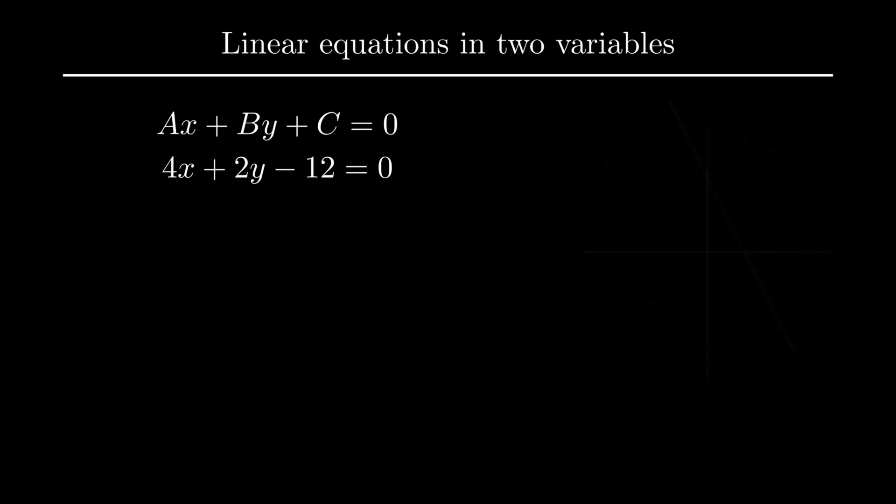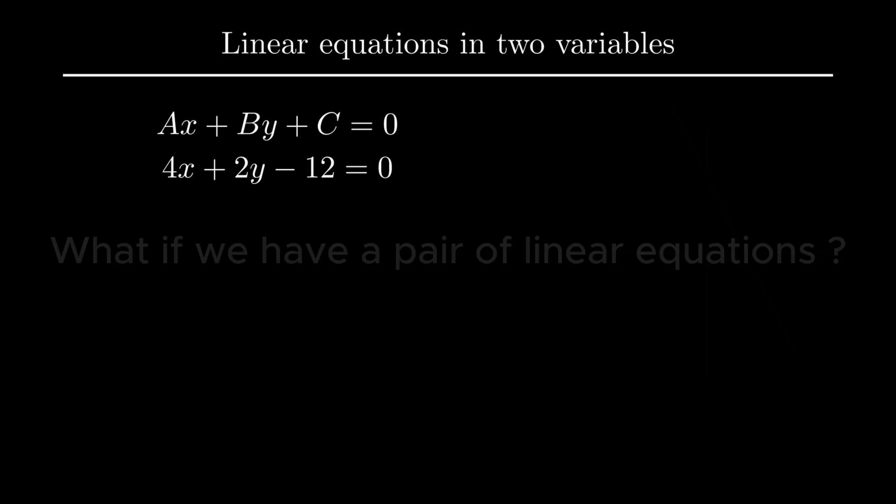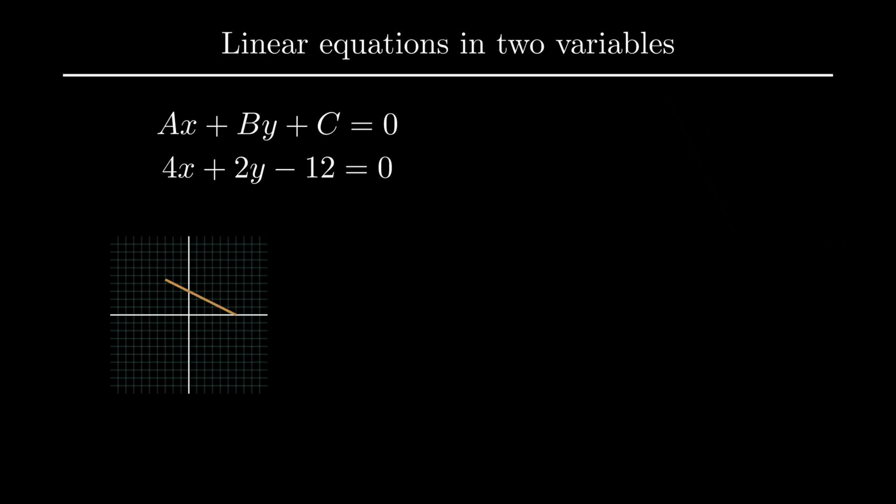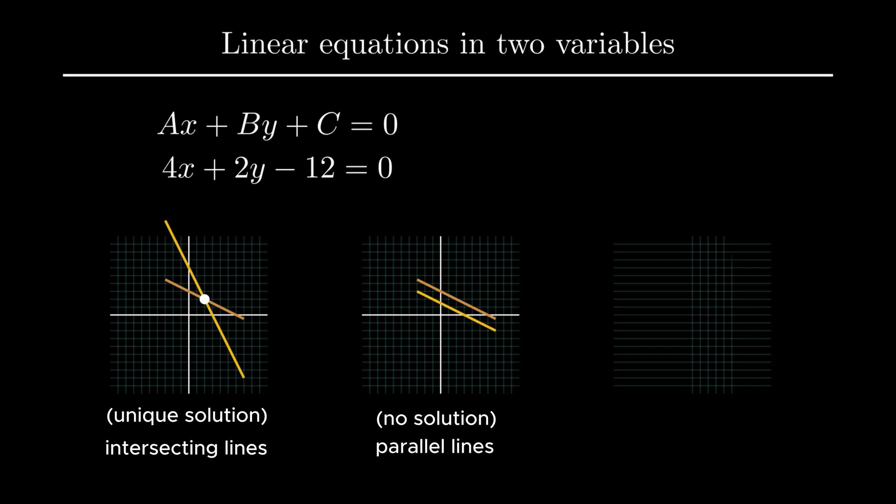If we extend our approach to a pair of linear equations in two variables, there exist three possibilities for their solution. That is only one unique solution if lines intersect, no solution if lines so obtained are parallel, and infinitely many solutions if lines obtained from the two equations are coincident.